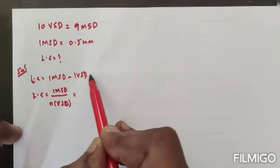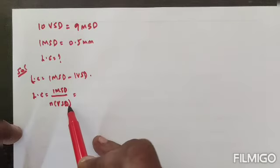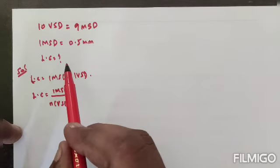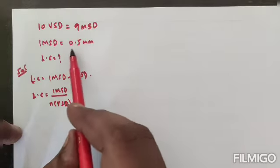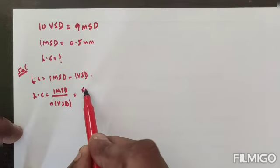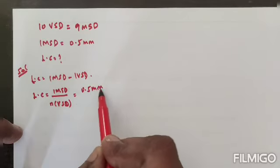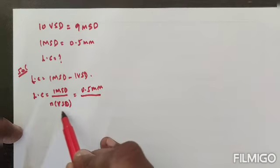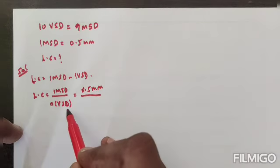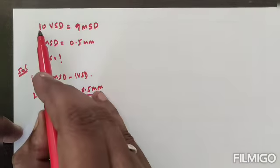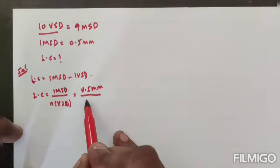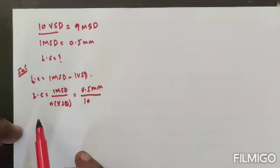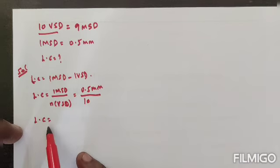So instead of the first formula, you can use the second formula. One MSD—each MSD value is 0.5 millimeters—so 0.5 millimeters divided by number of vernier scale divisions. Number of vernier scale divisions here is 10 VSD. Therefore, least count is equal to 0.05 millimeters.